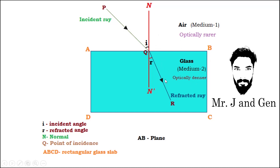Fifth term: refracted ray. The light ray traveling in the second medium — either bending towards the normal or bending away from the normal — is called the refracted ray. The light ray which travels in the second medium, whether it is optically denser or optically rarer, is the refracted ray. In later videos we will see why the light bends towards or away from the normal. Sixth term: refracted angle (r) — the angle which the refracted ray makes with the normal is called the refracted angle.